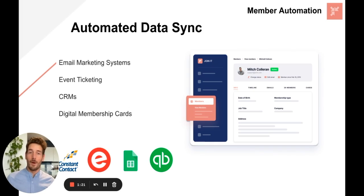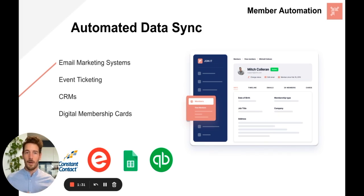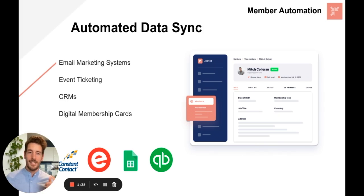Another way that we support member automation is through our automated data sync. In your organization, it's likely that membership data is the most important data that you have, and it's common that other systems like email marketing and event ticketing run off this data. But it's no good if that data is outdated or if it requires manual updates and manual syncs from you. So we automated it. Let's take a look at how it's done.